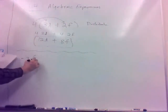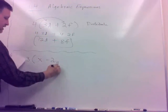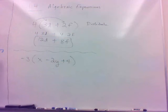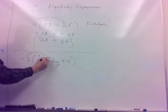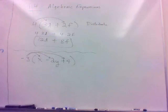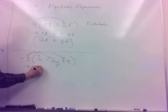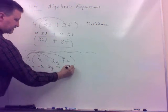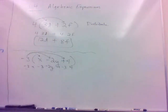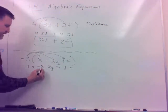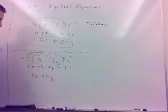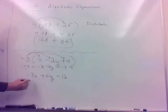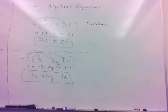If we have negative 3 times (x minus 2y plus 4), the same thing holds. We distribute the negative 3 to all of those: negative 3 times x is negative 3x; negative 3 times negative 2y — a negative times a negative is a positive — so that's positive 6y; and negative 3 times 4 — a negative times a positive — gives minus 12. Those aren't like terms since they have different variables, or no variable.